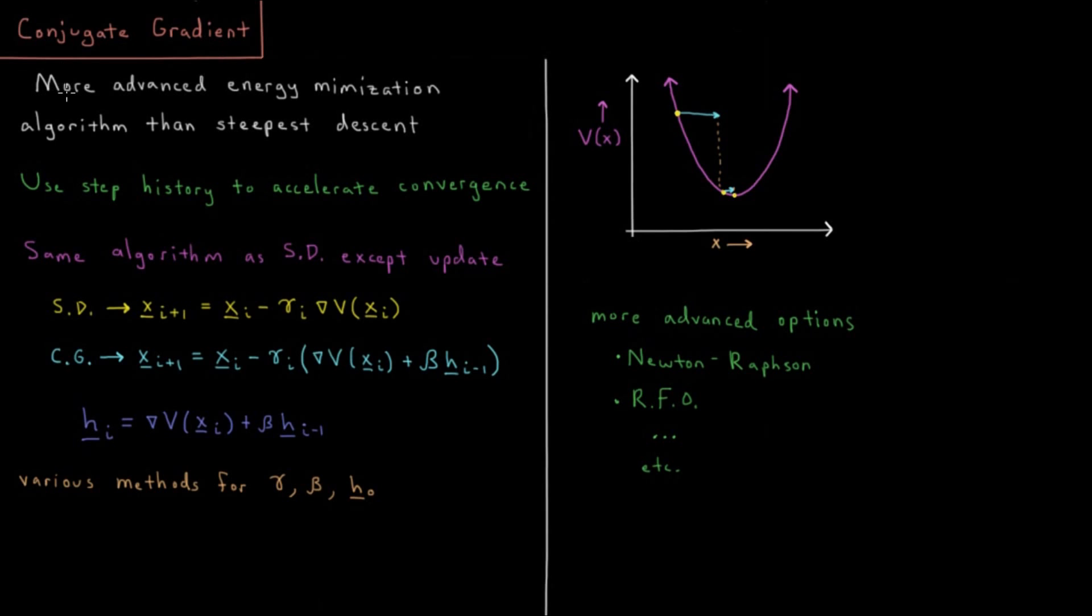One such more advanced energy minimization algorithm is called conjugate gradient. The main thing that all these more advanced methods do that steepest descent does not do is they use the step history to accelerate convergence.